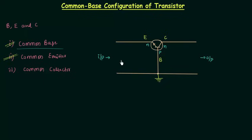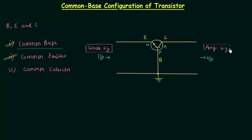I am calling this side the input side and this side the output side because a weak signal is introduced on this side, and we have the amplified signal on the output side. This will happen only when the transistor operates in active mode, so there is amplification of the weak signal in active mode.